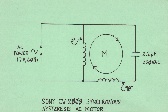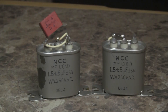The rotation speed of the magnetic field is exactly the same as the power line frequency — in the USA, that is 60 revolutions per second. But for this motor, two windings are used for each phase, which cuts the rotational speed in half, giving us 30 revolutions per second, or 1800 RPM.